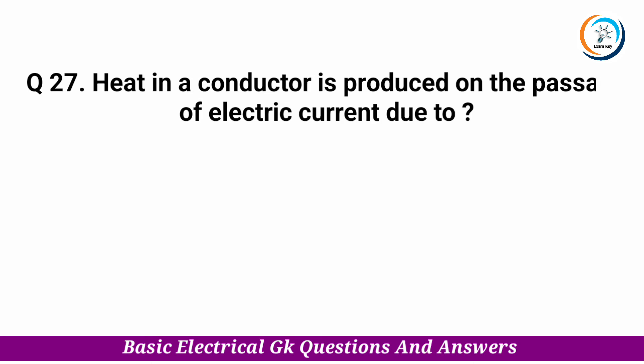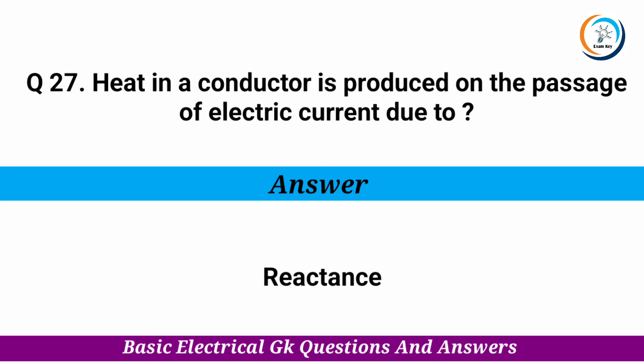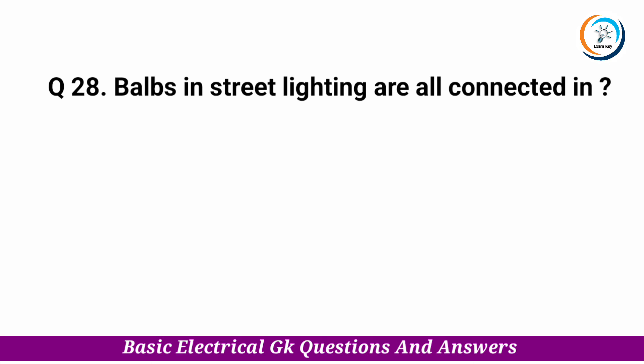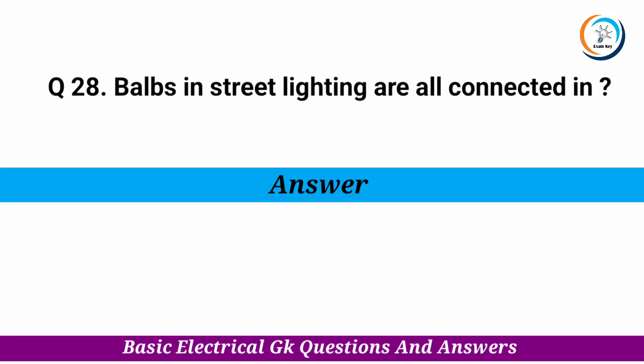Heat in a conductor is produced on the passage of electric current due to — Answer: reactance. Valves in street lighting are all connected in — Answer: parallel.